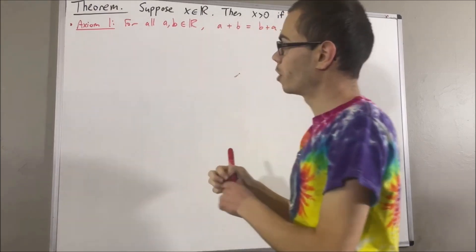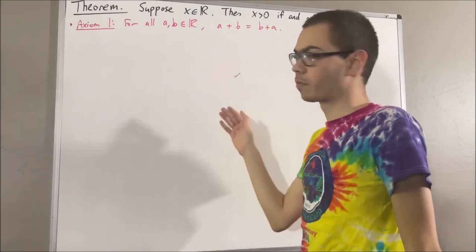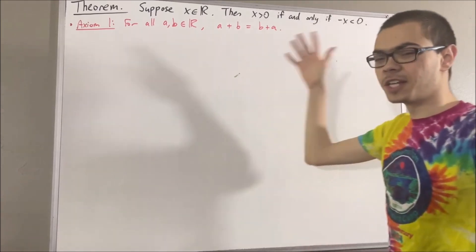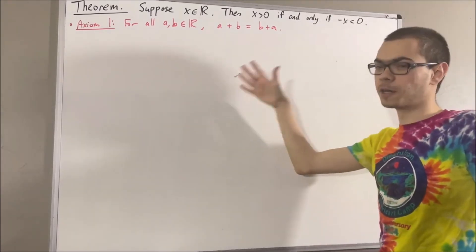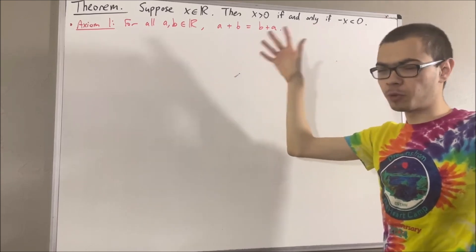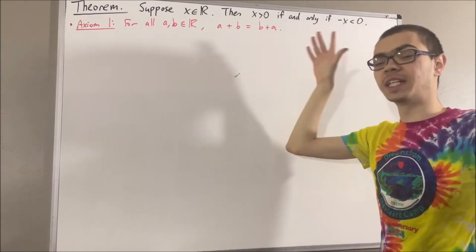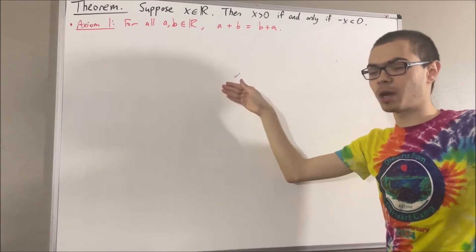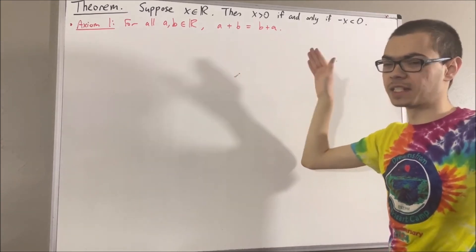We have axiom 1, which is just the commutative property. Axiom 5 introduces the concept of the negative of a real number, and it says for every real number x, there exists a real number which we call the negative of x, that has the property that x plus the negative of x is equal to zero.